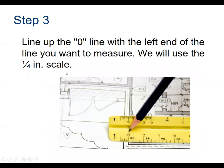When measuring, the first thing you want to do is line whatever you're measuring on the drawing up to the zero. Realize that you're in quarter inch scale, so the zero, two, four, and six are the numbers you're looking at. In between those, you have other numbers which are for a different scale coming from the other direction of the ruler.